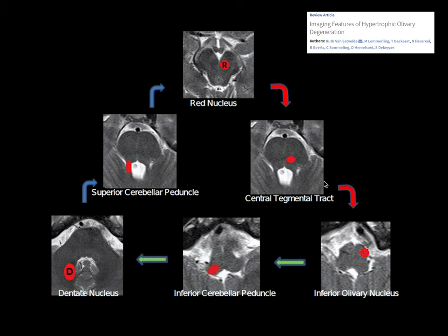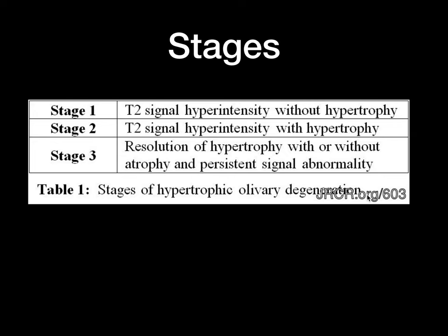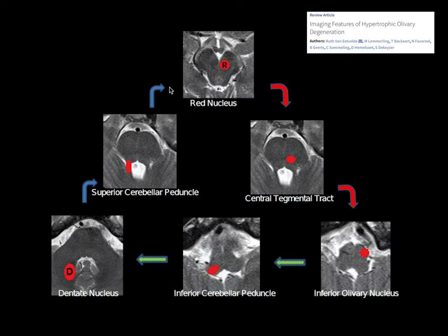This pathway is taken from a review article on the imaging features of hypertrophic olivary degeneration. The red nucleus in the midbrain sends fibers through the central tegmental tract — the fibers cross and enter the inferior olivary nucleus. From the inferior olivary nucleus, fibers travel to the contralateral dentate nucleus through the inferior cerebellar peduncle, crossing from one side to the other. The dentate nucleus then connects back through the superior cerebellar peduncle to the red nucleus — this circuit is called the Guillain-Mollaret triangle. Disruption of any of these fibers or locations within this triangle can lead to hypertrophic olivary degeneration.